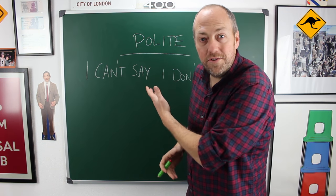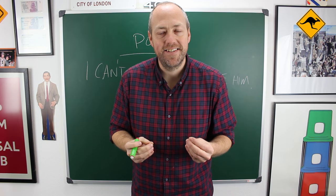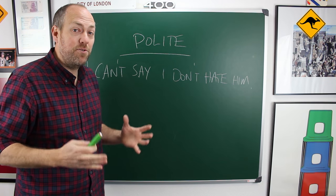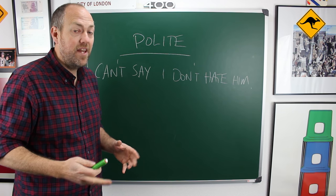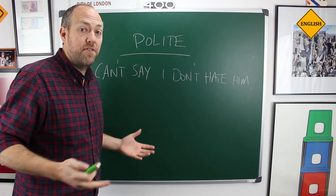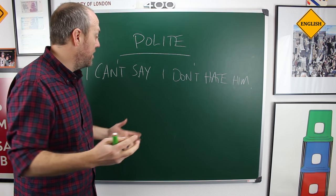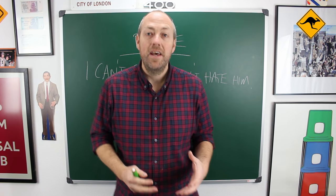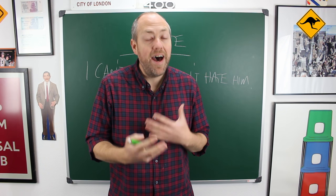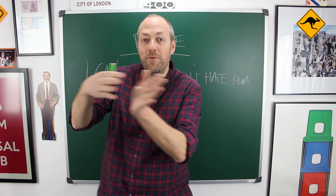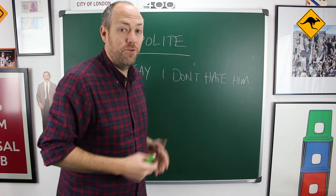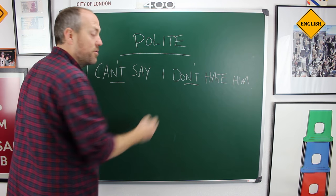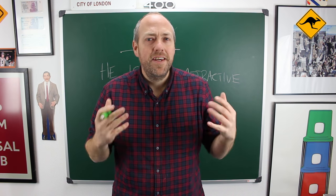The second reason you might want to use a double negative is a classic English reason: because you want to be polite. For example, rather than saying 'I hate him,' to maneuver around this more politely, you can use multiple negatives: 'I can't say I don't hate him.'